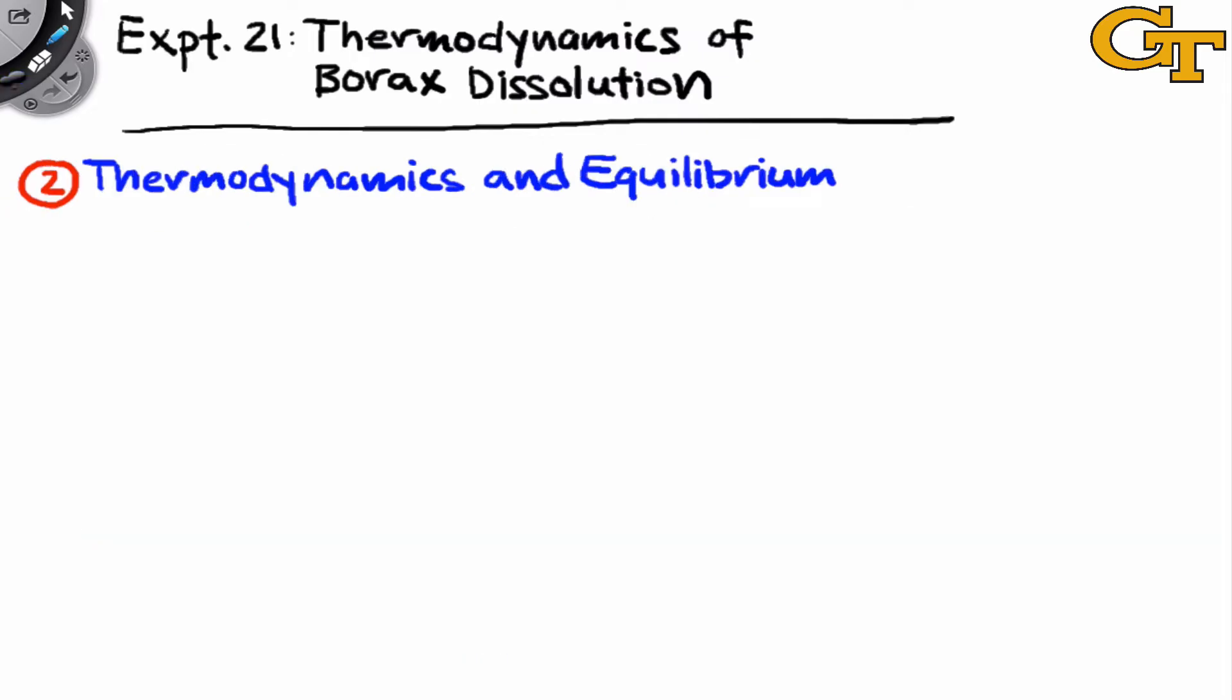Thermodynamics is really the study of systems in equilibrium. And so there's a fundamental link between equilibrium and equilibrium constants such as Ksp and changes in thermodynamic state functions like delta G, delta H, and delta S, and in particular changes in these functions for standard states, which we denote with the little circle in the upper right of each quantity.